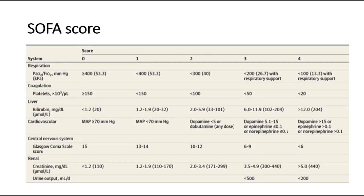This table shows the criteria in the score, which include partial pressure of oxygen, platelet levels, bilirubin levels, mean arterial pressure, GCS score, creatinine levels, and urine output.